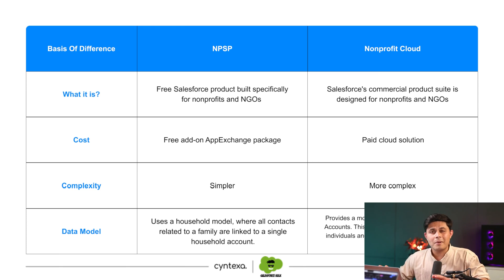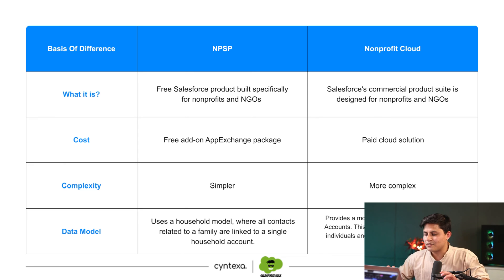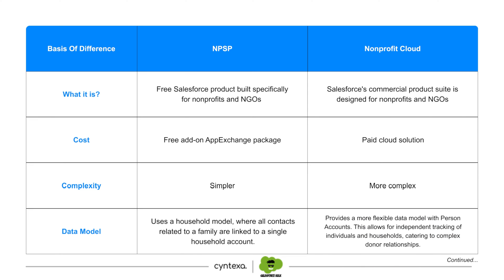Nonprofit Cloud is not free at all, whereas the NPSP AppExchange application was free. Nonprofit Cloud is also more complex, whereas NPSP was simpler. NPSP used a household data model where all contacts were linked to a particular account. Nonprofit Cloud allows person accounts and more, enabling you to manage specific information about individual donors.